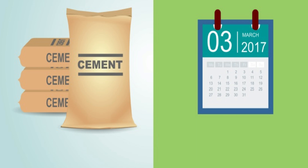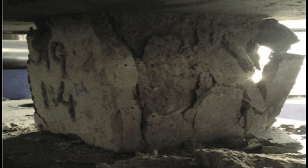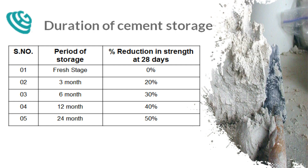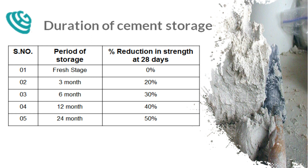How do you find the strength? If you use fresh cement, it is 100% strength. If we use cement at 3 months, we can see a reduction in compressive strength of 20%. At 6 months, the compressive strength reduces by 30%. At one year, the strength reduces by 40%. If we use cement at two years, the strength reduces by 50%. So the validity period is very important.